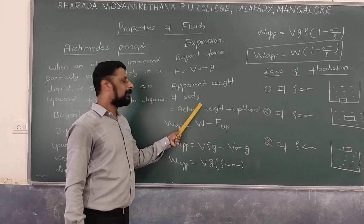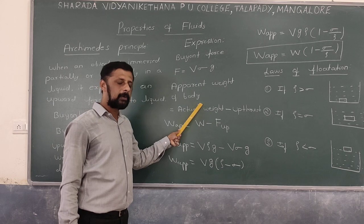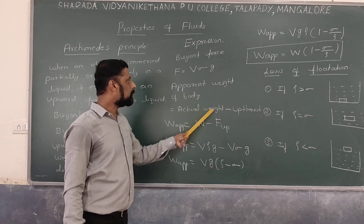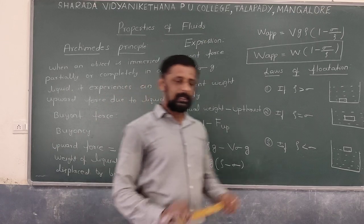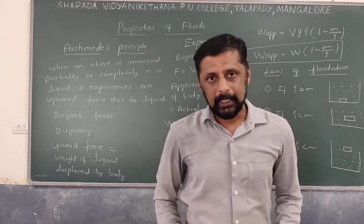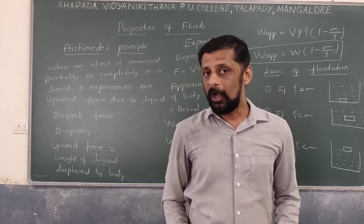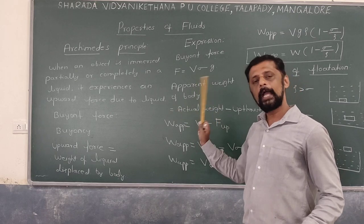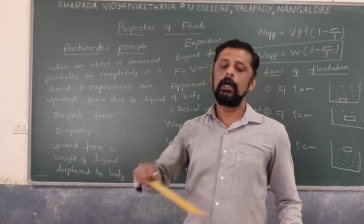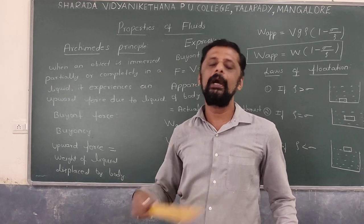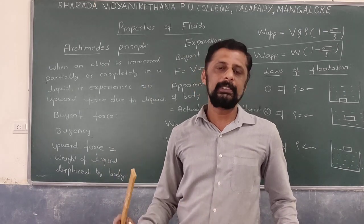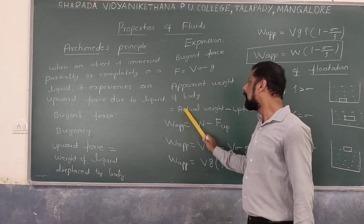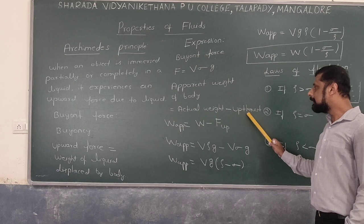Next, apparent weight of a body when immersed partially or completely in a liquid. Apparent weight = actual weight − upthrust. When immersed, the actual weight remains the same, but the weight appears to change — hence it is called apparent weight. Apparent weight = W − F_upward. The actual weight always remains the same whether the object is outside the liquid, partially immersed, or completely immersed.